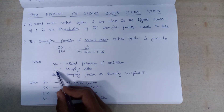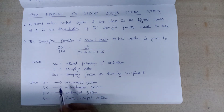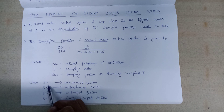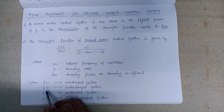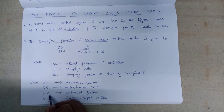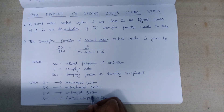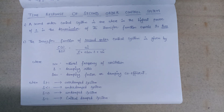Depending on the different values of delta, the system can be classified into four ways. If the value of delta is greater than 1, the system is said to be an over damped system. If the value of delta is less than 1, the system is said to be an under damped system. If the value of delta is exactly equal to 0, it is called an undamped system, and if delta is exactly equal to 1, the system is known as a critically damped system. This is all about the introduction of time response of second order control systems.